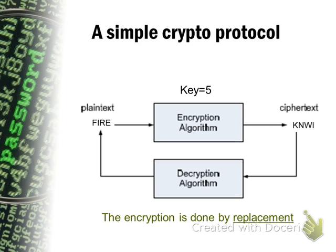Here you can see a simple example of a simple crypto protocol. The idea is very simple: we have some plain text that we want to protect, encrypt, hide, and scramble so that it becomes different from the original content. In this example, the plain text is the word 'fire' — this is the word we want to hide, making it unreadable if intercepted by some non-authorized user. The plain text will work through the process of encryption. The encryption algorithm is essentially a protocol, a set of steps that transforms our original plain text into the ciphertext.